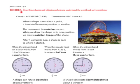We are going to continue on our big idea: describing shapes and objects can help us to understand the world and solve problems. Our concept today is rotations or turns. When a shape turns about a point, it is rotated or turned from one position to another. This movement is called a rotation or a turn. When we draw the shape in its new position, we draw a rotation image of the shape. After one complete turn, the shape is back where it started.